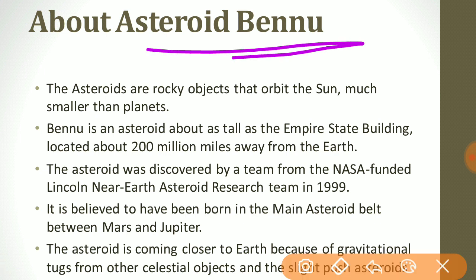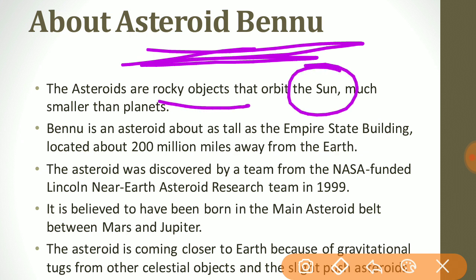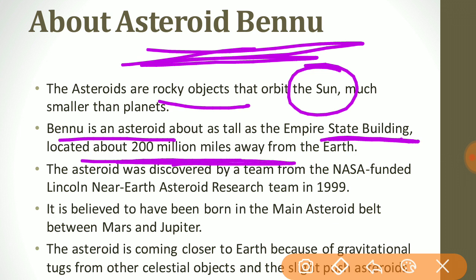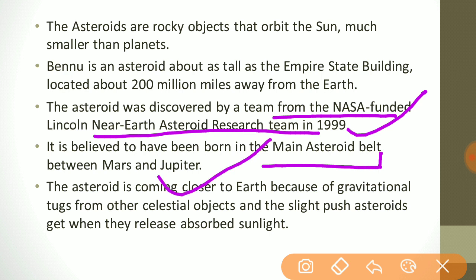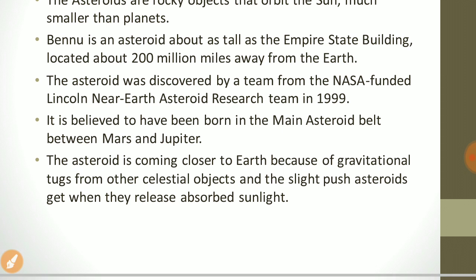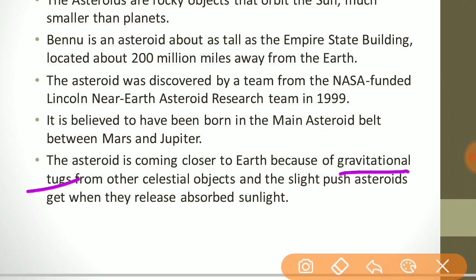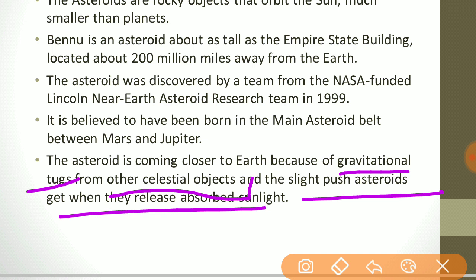Asteroids are rocky objects that orbit the Sun, much smaller than planets. Asteroid Bennu is about as tall as the Empire State Building and is located about 200 million miles from Earth. It was discovered by a team from NASA's Lincoln Near-Earth Asteroid Research team in 1999 and is believed to have been born in the main asteroid belt between Mars and Jupiter. The asteroid is coming closer to Earth due to gravitational tugs from other celestial bodies and a slight push it gets when it releases absorbed sunlight.